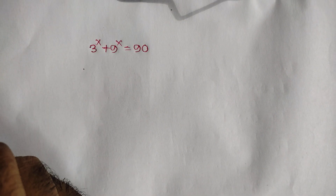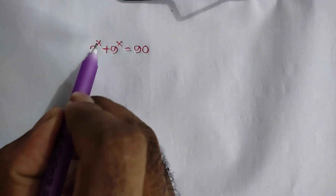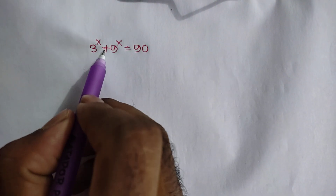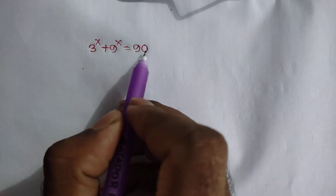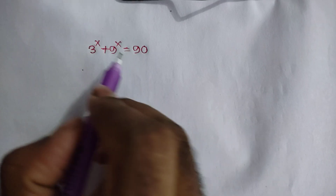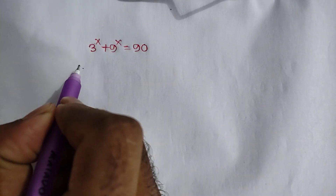Hi everyone. We have to solve 3 to the power x plus 9 to the power x is equal to 90. x is equal to what?